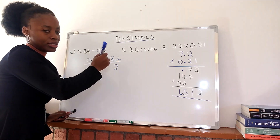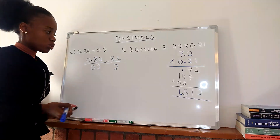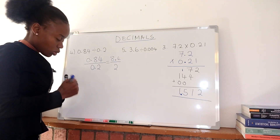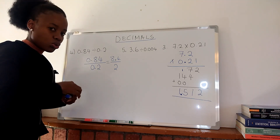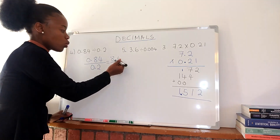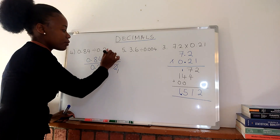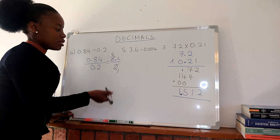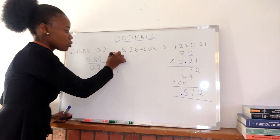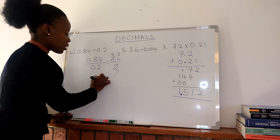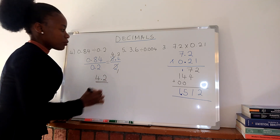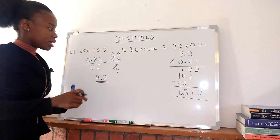So now we have 8.4 divided by 2. Two into 8 is 4, and 2 into 4 is 2, giving us 4.2. The final answer is 4.2.